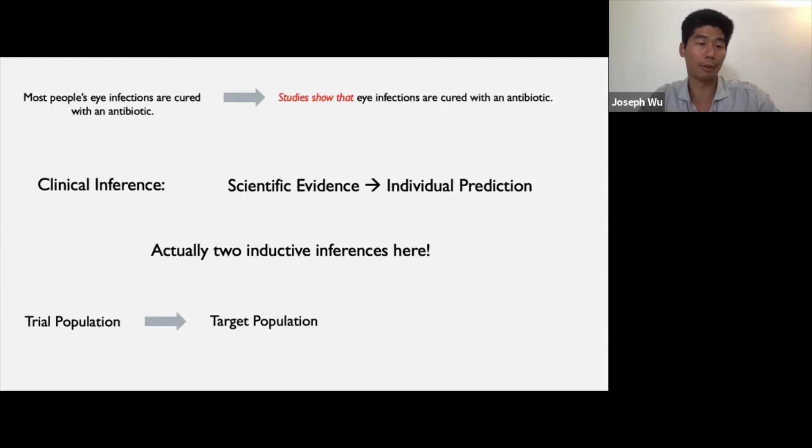But there's also a further inference going on here. The second inference involves moving from the target population to a particular individual. For example, even if the scientific evidence generalizes to people like Mary based on her age, Mary may still differ in relevant ways from the target population. Mary may have used more antibiotics in the past than the average person, and hence she might not respond as well to antibiotic treatment. If this is true, then Mary's physician must also ensure that the scientific evidence about the target population is individualized to Mary's particular circumstances.